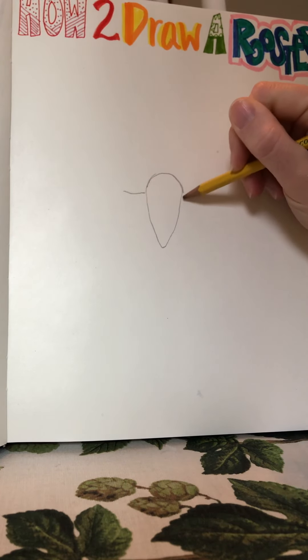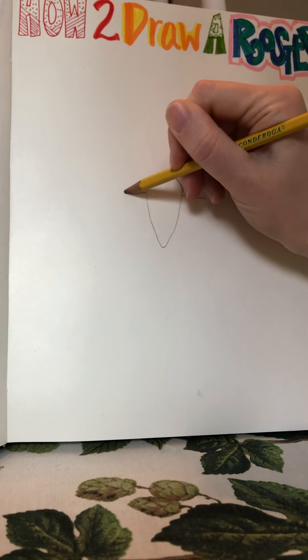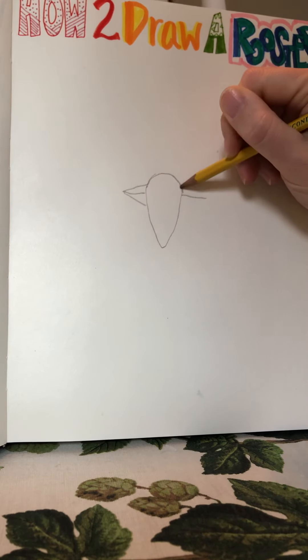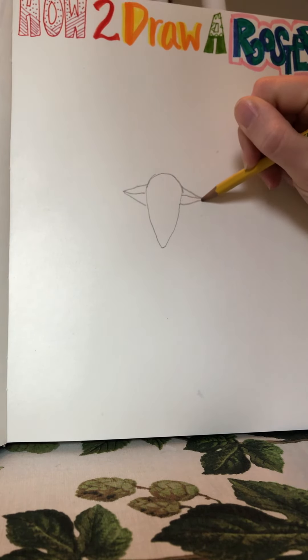Now I'm going to draw two horizontal lines. This is part of the beak mouth. And then I'm going to close that by drawing a triangle or just connecting it to the beak. There you go.